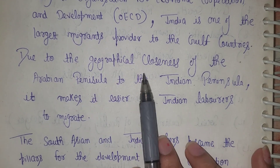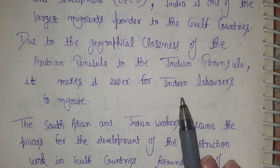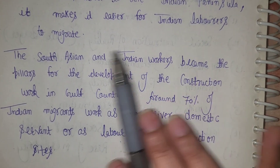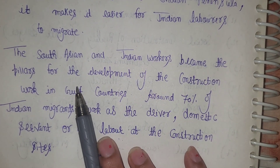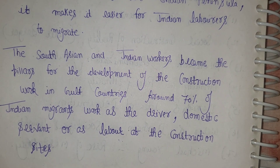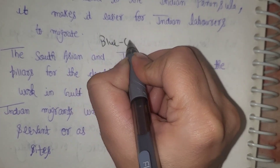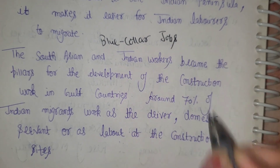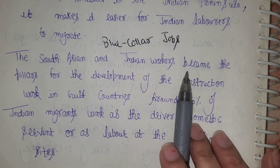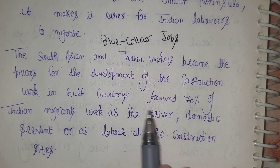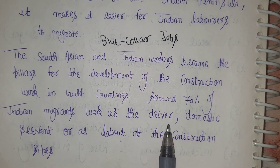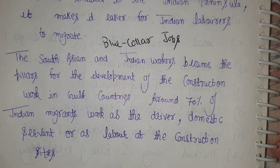Due to the geographical closeness of the Arabian Peninsula and the Indian Peninsula, it is easier to migrate from South Asia. South Asian and Indian workers perform construction work in the Gulf region — they are the pillars of Gulf development. Mostly they perform blue-collar jobs. Around 70% of Indian migrants work as drivers, domestic servants, or as labor at construction sites.